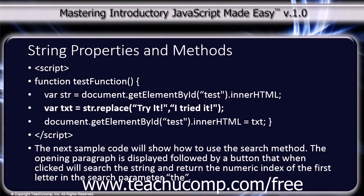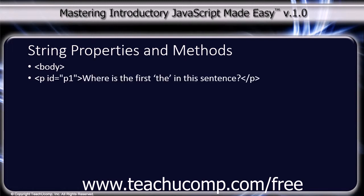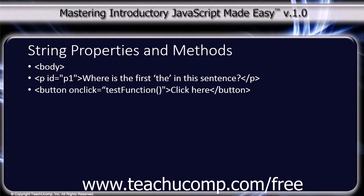The next sample code will show how to use the search method. The opening paragraph is displayed followed by a button that, when clicked, will search the string and return the numeric index of the first letter in the search parameter 'the'. Paragraph with an ID of p1: 'Where is the first the in this sentence?' Close paragraph tag. Button tag with on-click equals 'testFunction()': button label 'click here' and the close button tag. Paragraph with an ID of test and the close paragraph tag.